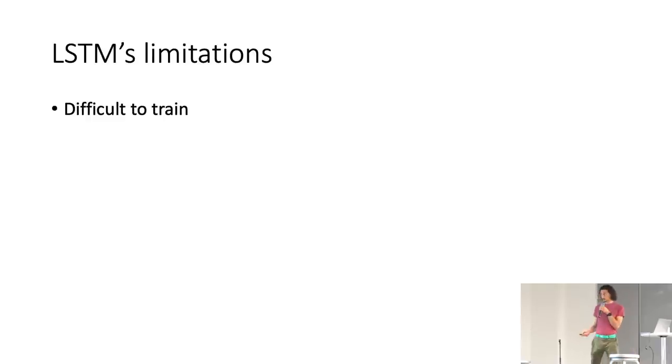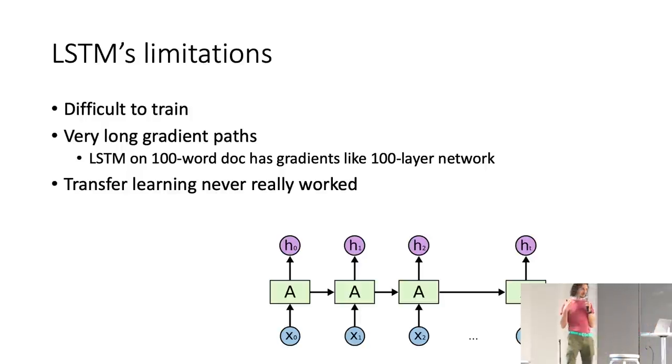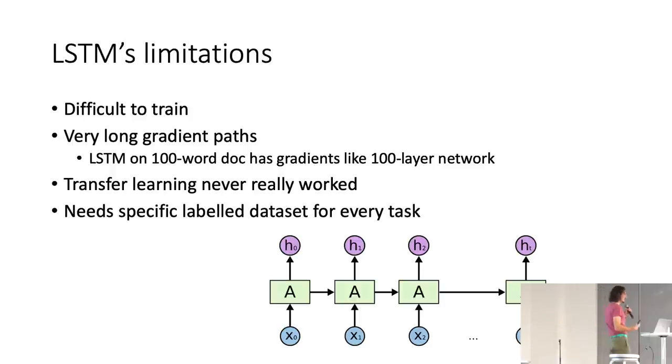However, LSTM is still pretty difficult to train because you still have these very long gradient paths. Even with those residual connections, you're still propagating gradients from the end all the way through this transformation cell over to the beginning. And for a long document, this means very, very deep networks that are just notoriously difficult to train. And more importantly, transfer learning never really worked on these LSTM models.